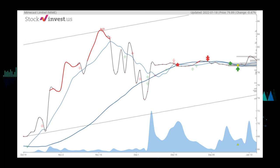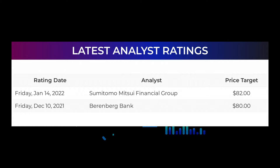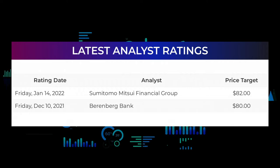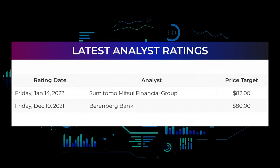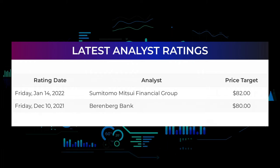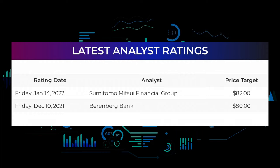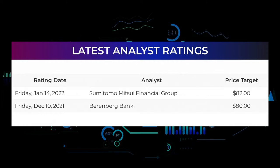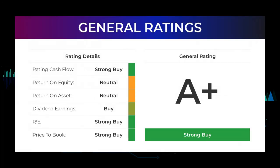That 12-month projection equals a price between $151.99 and $187.03 after a year. On analyst ratings and price targets: on Friday January 14, 2022, Sumitomo Mitsui Financial Group set a target of $82. On Friday December 10, 2021, Barenberg Bank set a target of $80. From analysts, Mimecast Limited stock received a general strong buy rating. Analysts give the P/E ratio a strong buy and price-to-book a strong buy rating, while the return on investment receives a neutral rating.